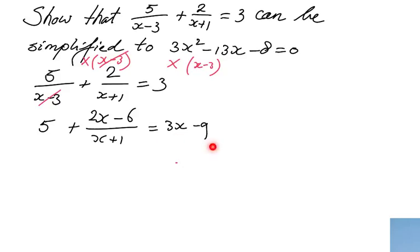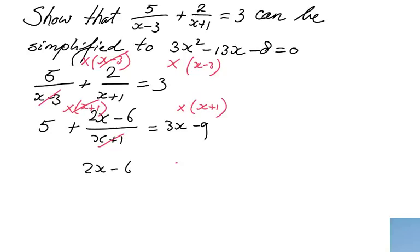And that equals 3x minus 9. Do you understand 3x minus 9? So now we have 2x minus 6 over x plus 1. Now we are going to do the same thing for this fraction — we don't like fractions, we want to get rid of fractions, so we multiply by the denominator x plus 1. The entire left side times x plus 1, the right side times x plus 1, and that fraction is gone. Let me just write down 2x minus 6 here.